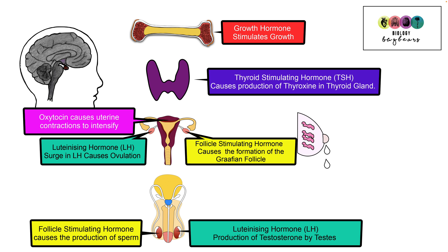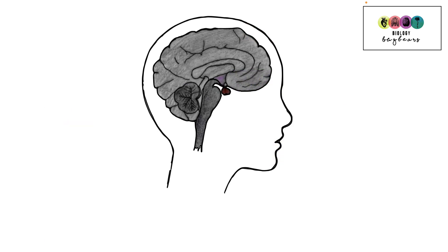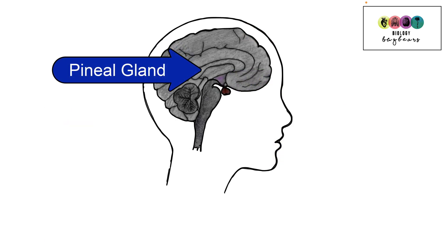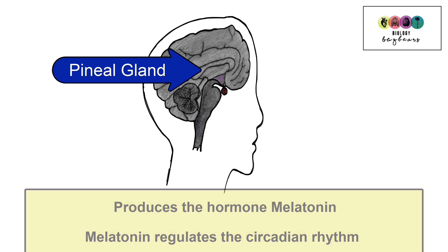Many of these hormones you meet again in human reproduction, so you have a chance to re-familiarise yourself with them there as well. Prolactin is produced by the pituitary gland and travels to the glands in the breast where it stimulates the production of breast milk. There is a tiny gland in your brain known as the pineal gland and it produces the hormone melatonin. Melatonin controls your circadian rhythm, so among other things your sleep cycle — when you wake and when you sleep.